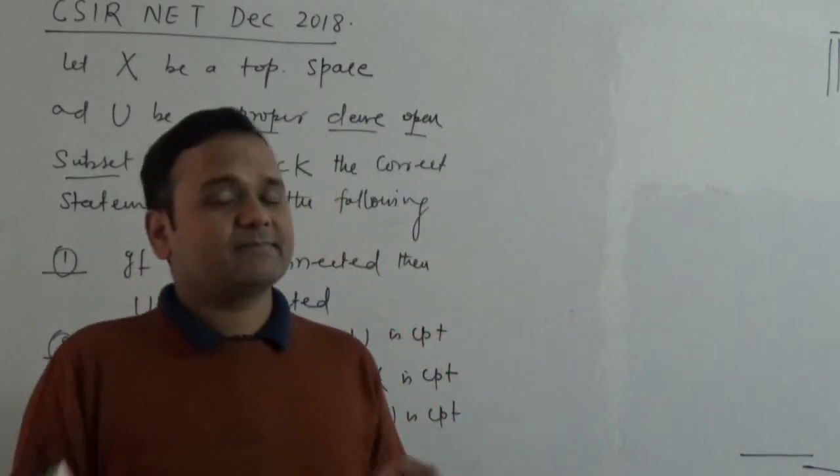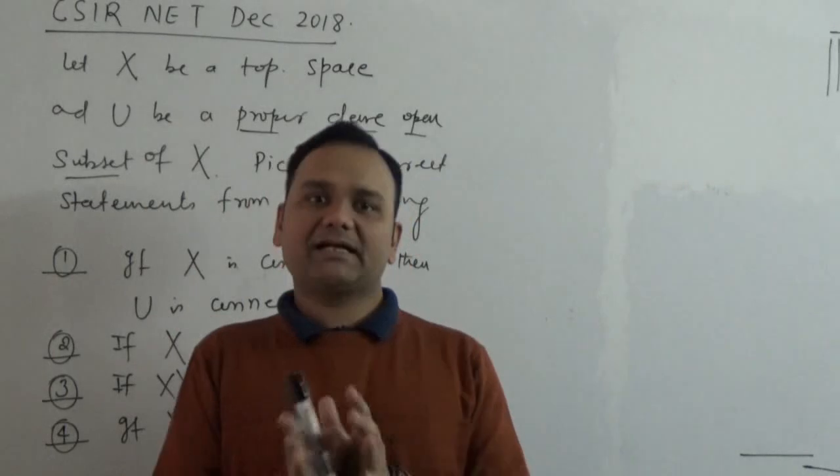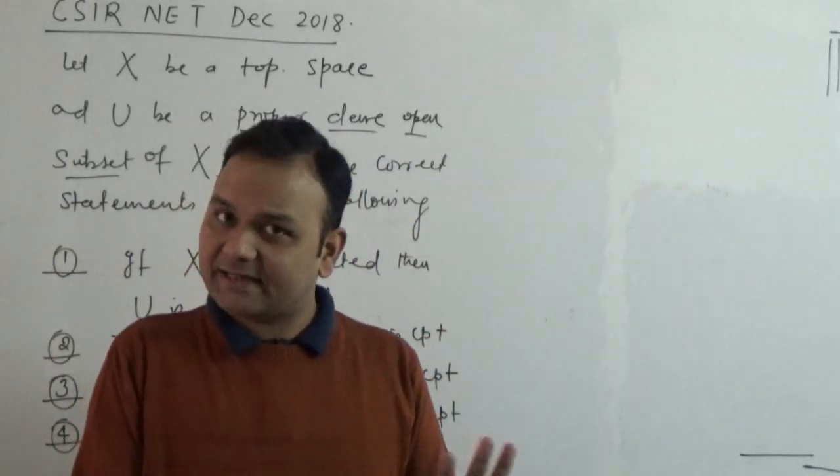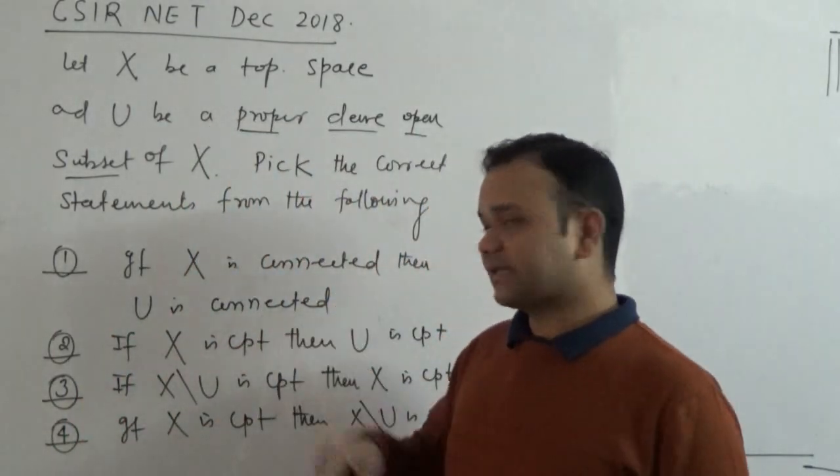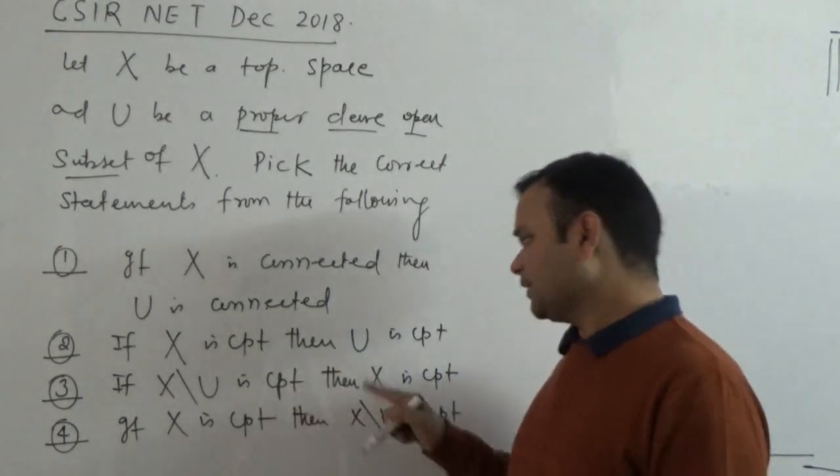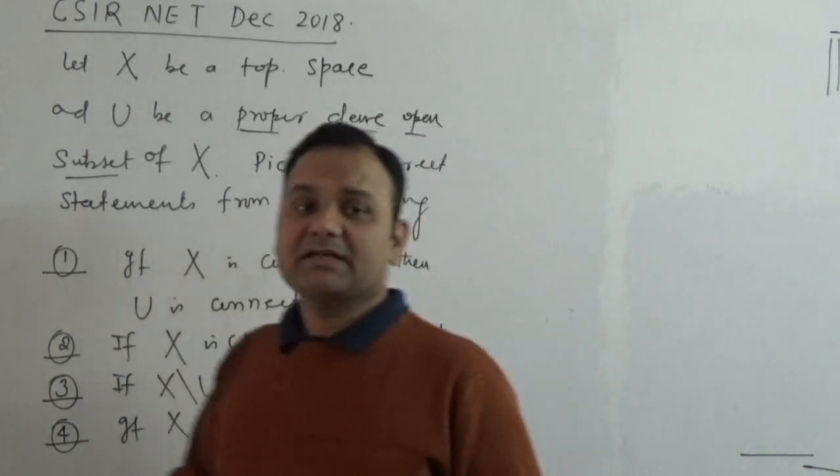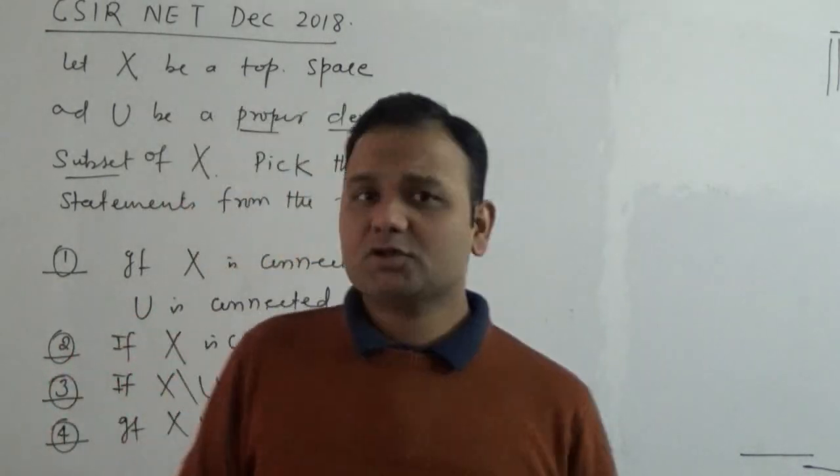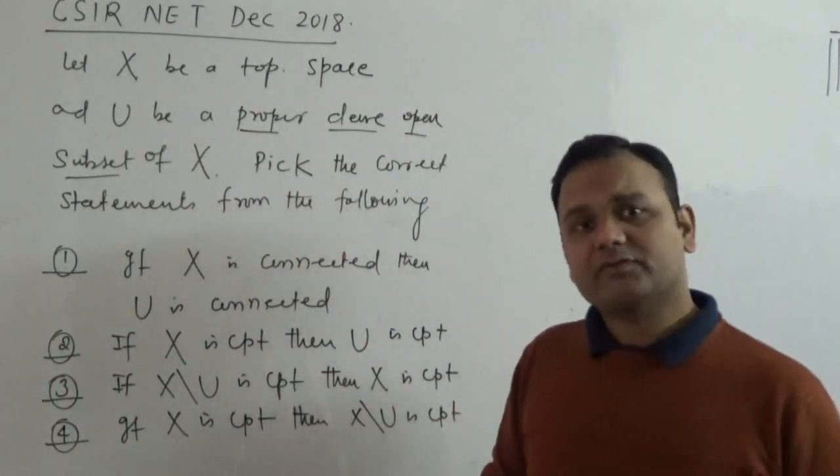So this question is basically asking for the connectedness and compactness in a topological space. That's what. Right? This question is asking for the connectedness and compactness in a topological space. So how should it be approached? When such questions arise, you are very confused. Right?